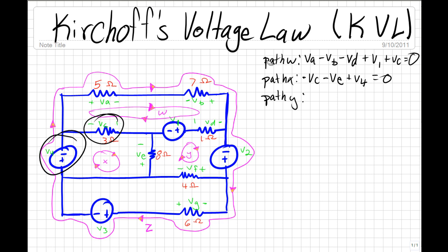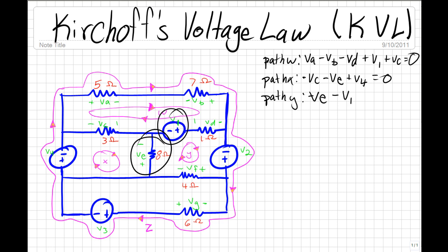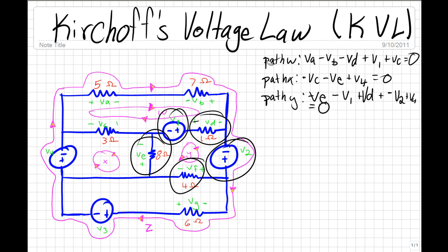Now for path Y, we have this voltage drop which is positive, so VE, plus this voltage drop which is negative, so minus V1, plus this voltage drop which is positive, so plus VD, plus this voltage drop which is negative, so minus V2, plus this voltage drop which is positive, so plus V4, and the sum of these should equal to zero.